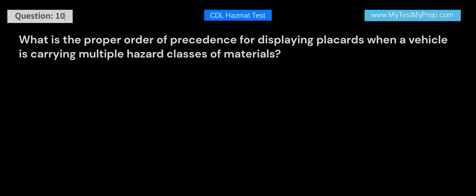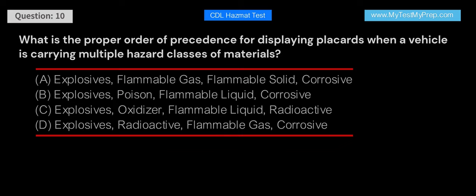What is the proper order of precedence for displaying placards when a vehicle is carrying multiple hazard classes of materials? A. Explosives, flammable gas, flammable solid, corrosive. B. Explosives, poison, flammable liquid, corrosive. C. Explosives, oxidizer, flammable liquid, radioactive. D. Explosives, radioactive, flammable gas, corrosive. Answer: B. The proper order of precedence is: Explosives, poison, flammable liquid, corrosive. This order helps communicate the most significant hazards first.